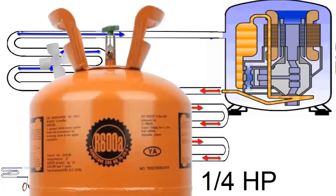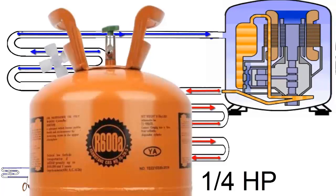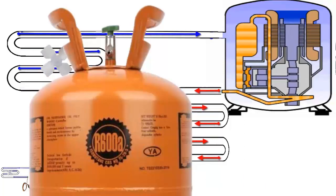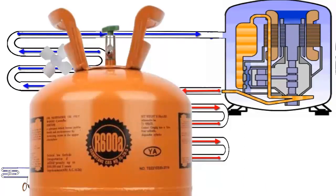On the screen, we observe a system that uses a 1/4 HP piston compressor, designed for both refrigeration and freezing, and operates with R600A refrigerant gas.